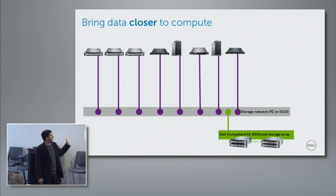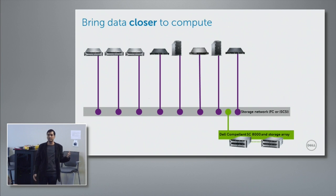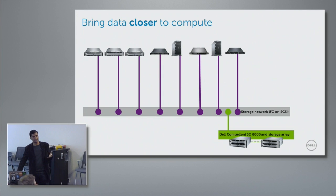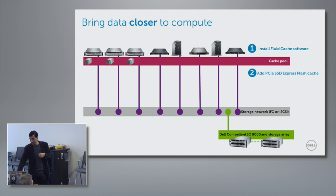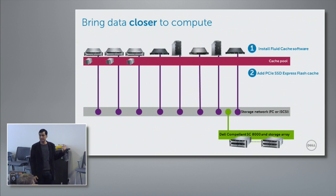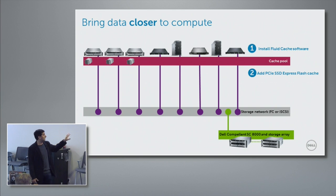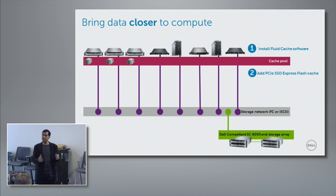Back to the problem statement: many servers — Dell PowerEdge or non-Dell — accessing a backend Dell Compellent SC8000. Fluid Cache for SAN is a software product that gets installed on all those servers. You need at least three servers in a cache cluster, with PCI SSD NVMe drives providing 50-microsecond latency. Dell was the first to offer PCI SSDs in a hot-pluggable manner. Now NVMe is an industry standard available in hot-pluggable form, or as PCI SSD cards for existing servers.